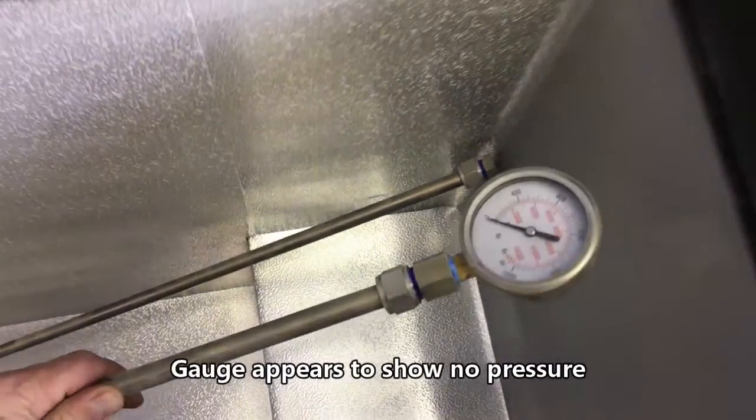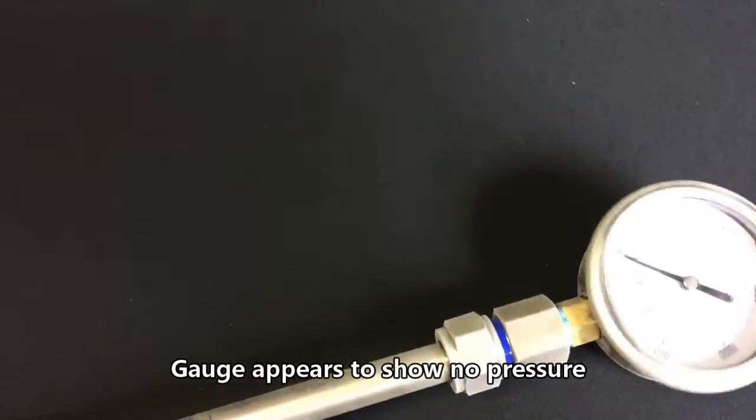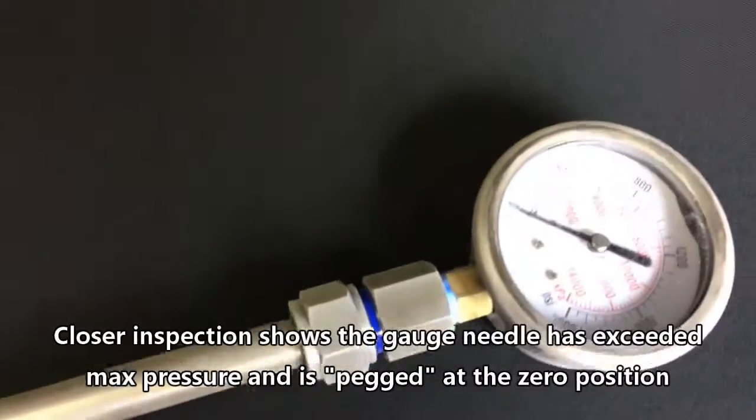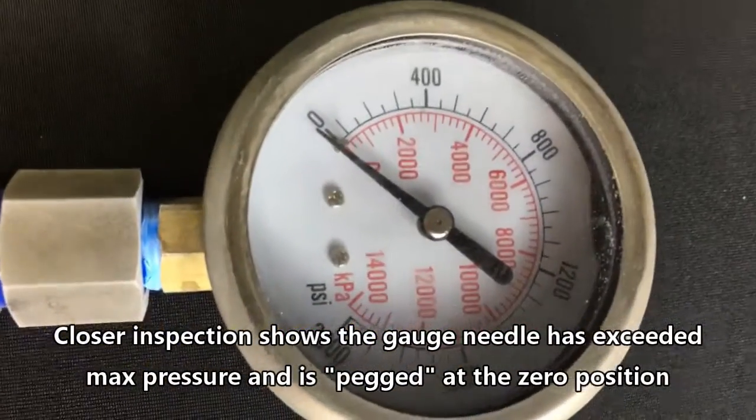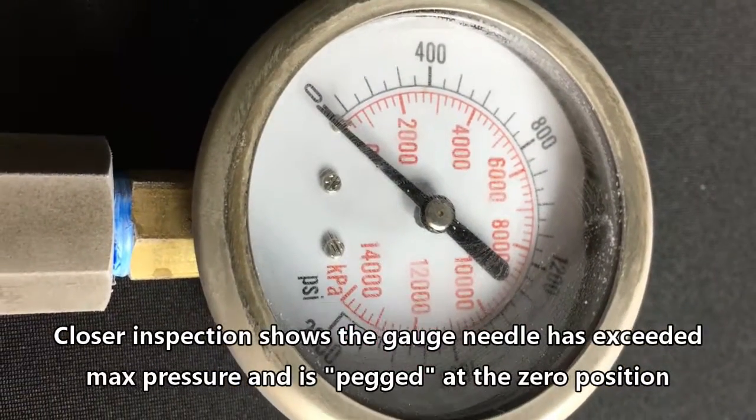Test sample number three appears to show it is no longer holding pressure. Upon closer inspection, the gauge needle has exceeded max pressure and is pegged at the zero position. After thawing, the gauge returns to 1,200 PSI showing no pressure leakage in the sample.